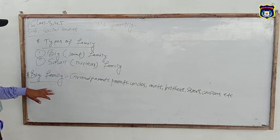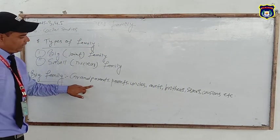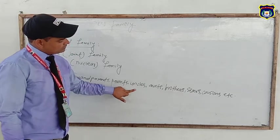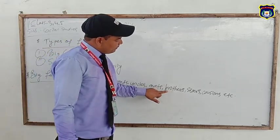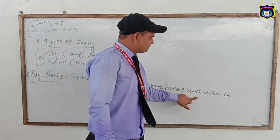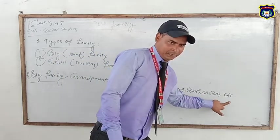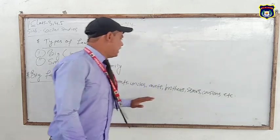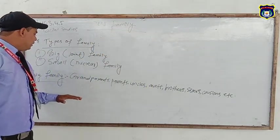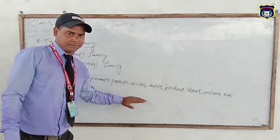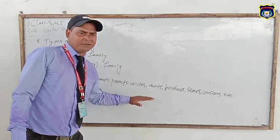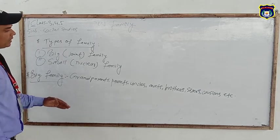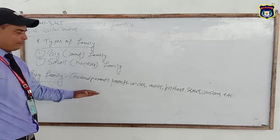These are big families: grandparents, parents, uncles, aunts, brothers, sisters, cousins, etc. So you know that these are the big family members. Now I am going to show you a small family and how many members are in a small family.